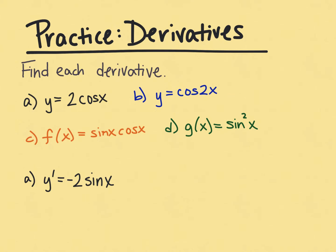In part b, we're taking the derivative of the cosine of 2x. The derivative rule for cosine is negative sine, so this is going to be negative sine of 2x — we keep the inside function the same. Using the chain rule we then have to multiply by 2, so it's negative 2 sine of 2x.